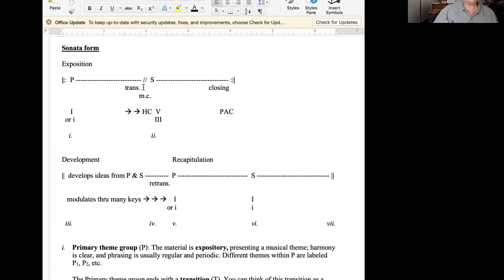But the transition usually leads to a half cadence, and it could be a half cadence in the main key, or it could be a half cadence in the secondary key. I abbreviated this MC, and what MC stands for is a medial caesura. It's a pause in the middle of the sonata form.